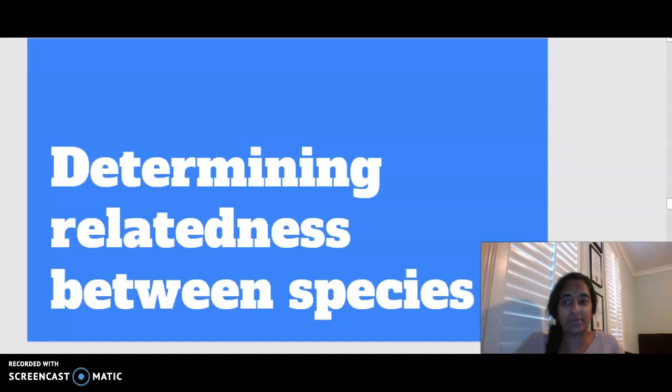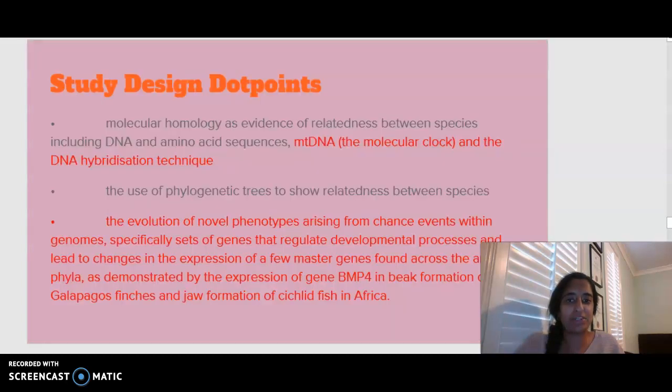In terms of looking at determining relatedness between species, the dot points that we are looking at are just these two over here. Looking at molecular homology as evidence of relatedness, which is identifying DNA and amino acid sequences.